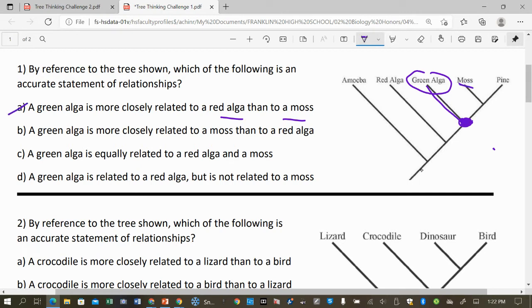So the green algae is more closely related to the moss than the red algae. That is true because here's the green algae, here's the moss, here's where their lineage is branched. You would have to go back further in time. Down here is a long time ago, and so this is a more distant common ancestor between the green algae and the red algae. Moss is more recent. Up here is now, so it's more recent.